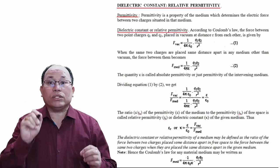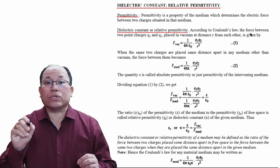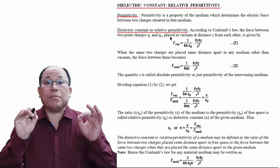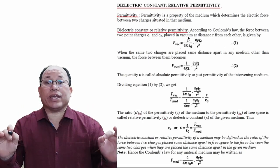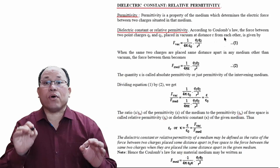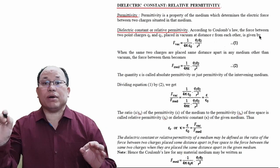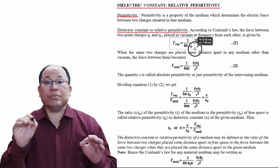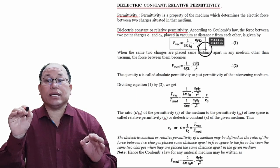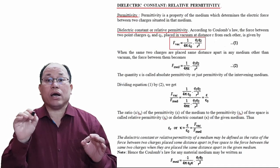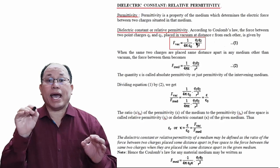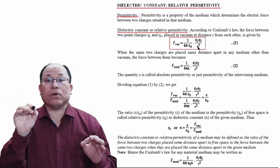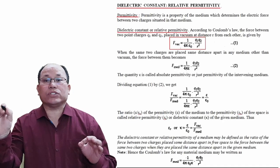According to Coulomb's law, the force between two point charges q1 and q2 placed in vacuum at distance r from each other is given by: F_vacuum = (1 / 4πε₀) × (q1·q2 / r²). This is equation 1.